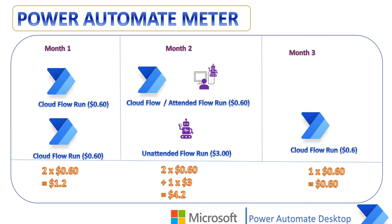For example, in month one, if I'm running cloud flows at 60 cents and I have two flows, that's 2 × 60 cents = $1.20 for the first month. In the second month, I have a cloud flow and an attended flow — both charged at 60 cents each — plus one unattended flow at $3. So for the second month: 2 × 60 cents plus $3 = $4.20. In the third month, I have only one cloud flow running at 60 cents, so I pay just 60 cents. I don't need any subscription licenses for this model.